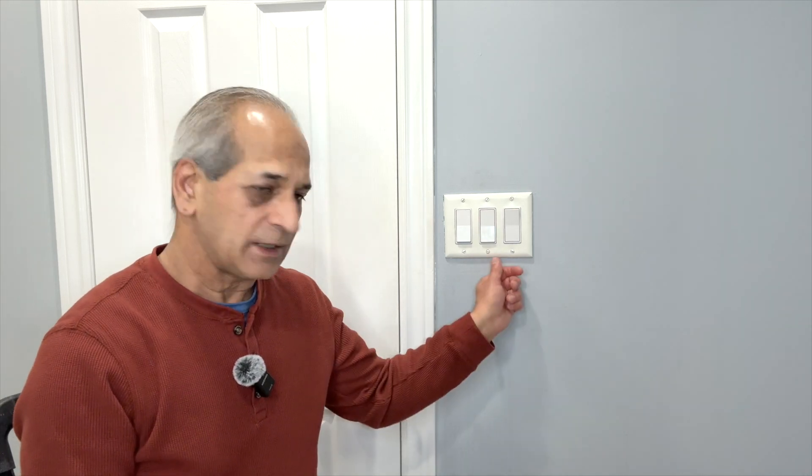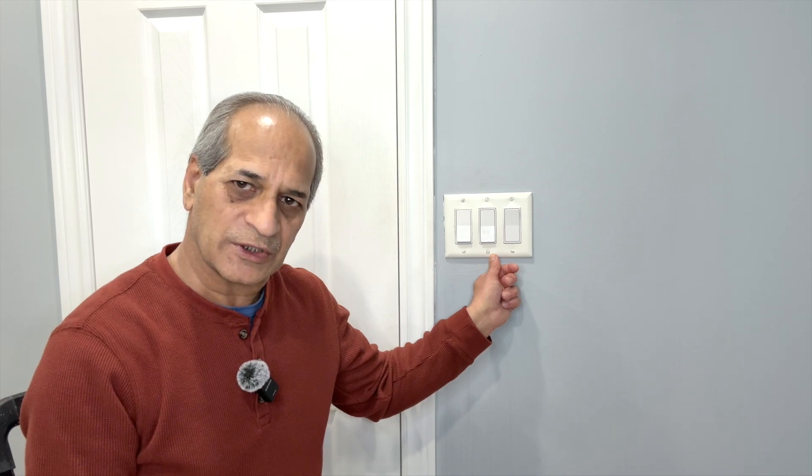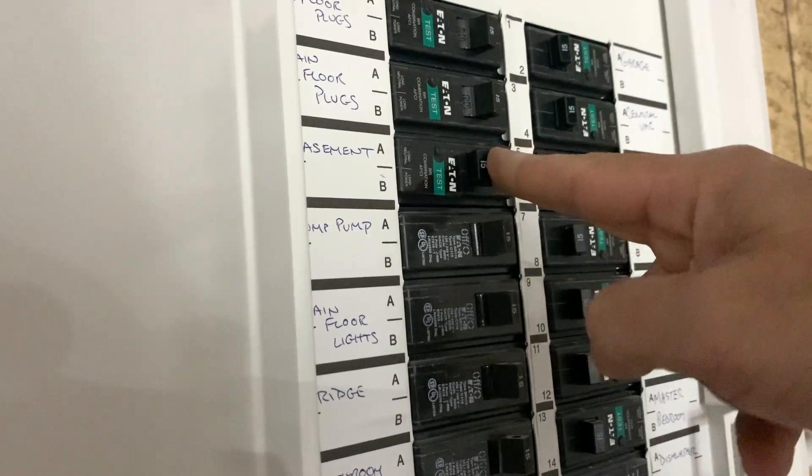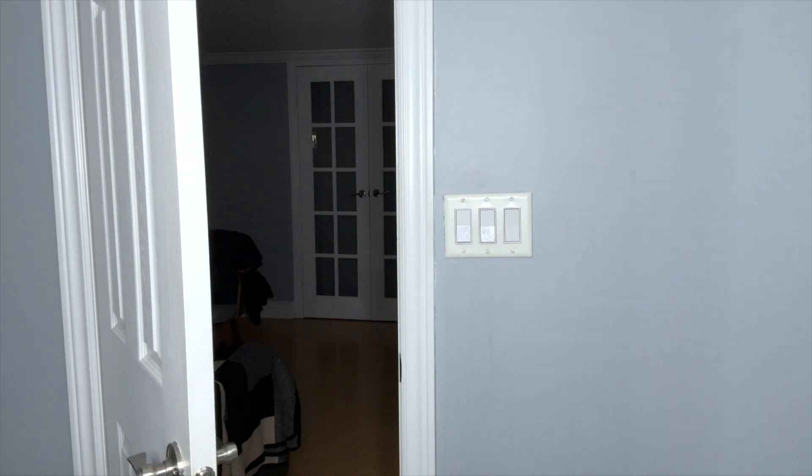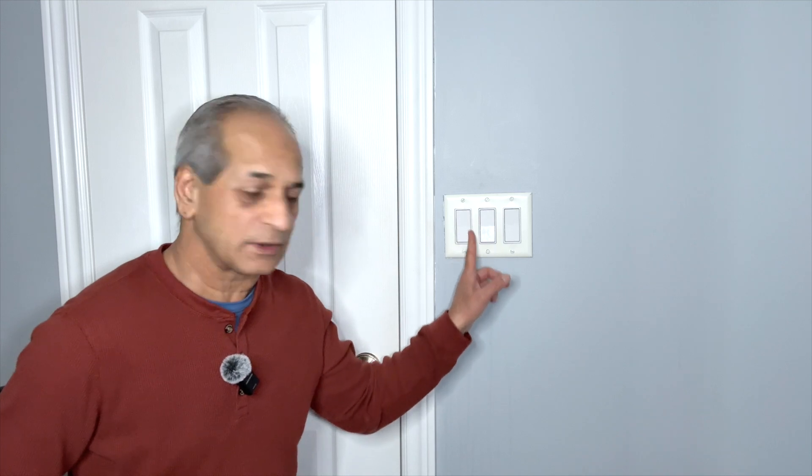The fan is on now. I will go ahead and turn off the circuit breaker and then safely remove the cover plate and the exhaust fan switch. I just turned off the circuit breaker and you might have noticed that everything is off now. No light, no fan, nothing. I will now safely remove this wall plate and the exhaust fan switch.